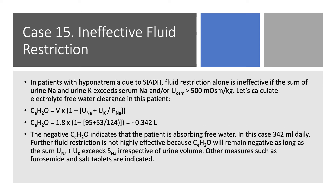Here's the answer. Urine osmolality is over 500. We said if urine osmolality is over 500, then fluid restriction is not going to work. Urine is too concentrated. The patient is dumping the sodium in the urine and absorbing the water. Another way to look at it: you look at urine sodium and urine potassium, you add them up. If they are more than serum sodium, as is the case here, then fluid restriction is not going to work.